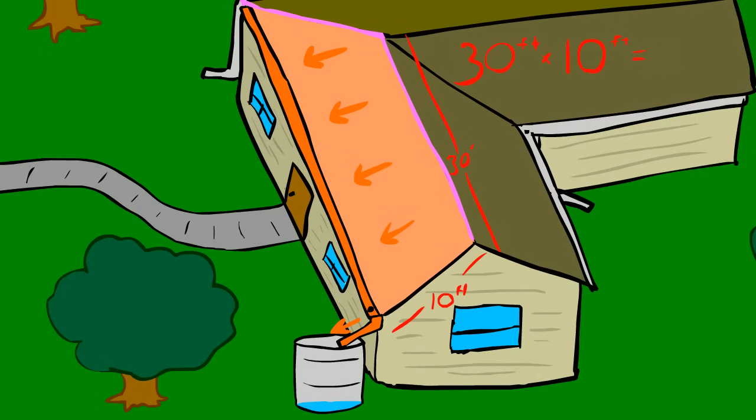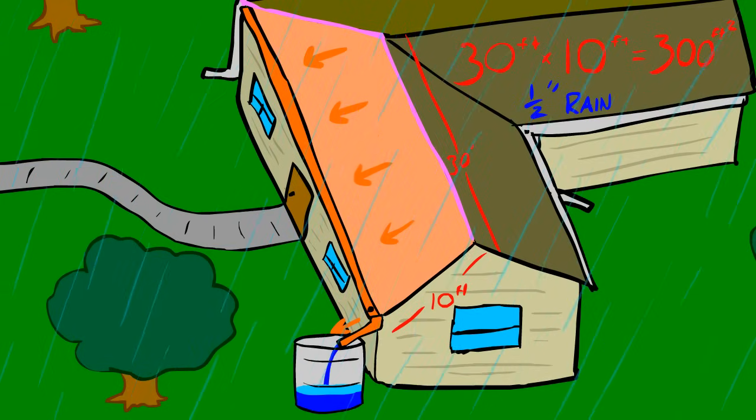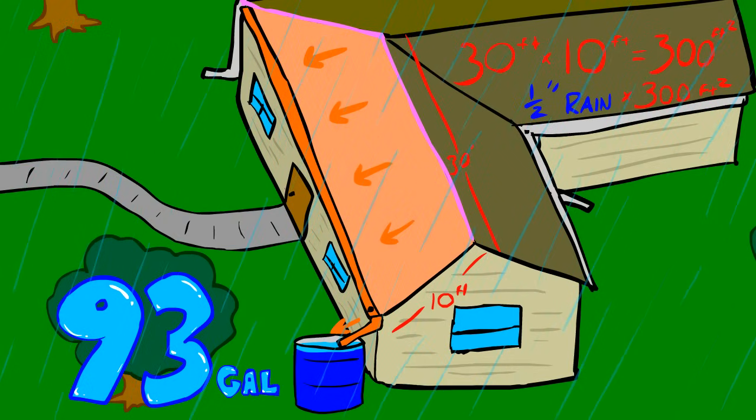Let's say that it rains a half an inch over this house on this watershed. That ends up being over 93 gallons of water. Now think about the same thing on a larger scale.